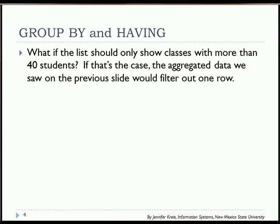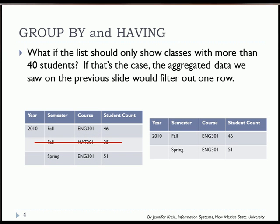What if the list should only show classes with more than 40 students? If that's the case, then we're going to eliminate one of those rows of output. That's an example of where we will make use of the HAVING clause to filter out classes with a student count less than 40.